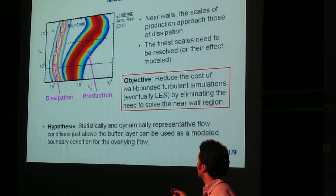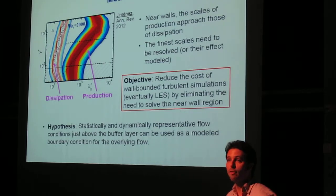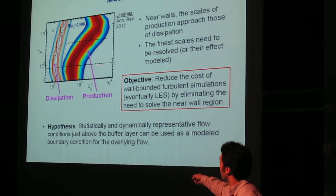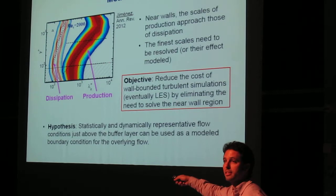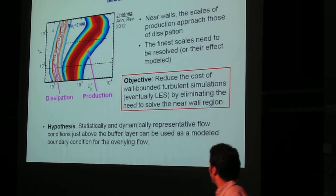So the idea that we wanted to explore is whether we could impose a boundary condition that we could obtain from a buffer layer flow, so the flow in this region, and just impose the top of that flow as a boundary condition for the overlying flow.